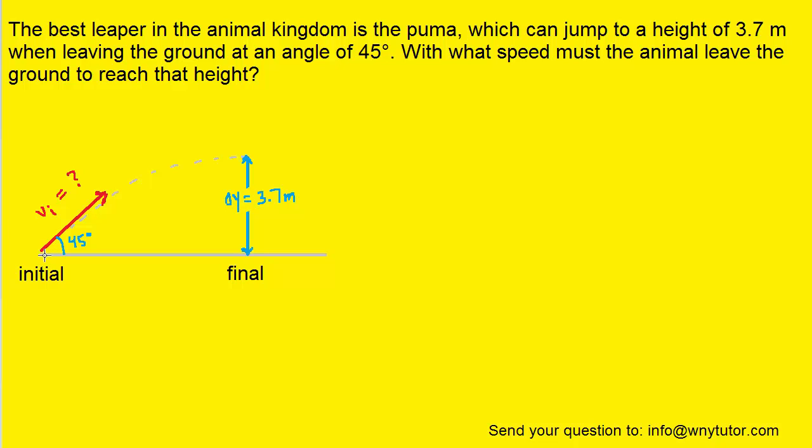So to proceed in solving this question, what we always want to do in a projectile motion question is to break the initial velocity into its x and y components. We can draw the x component as projecting horizontally to the right, and the y component will be projecting vertically upward. We'll add some arrowheads to indicate those directions.